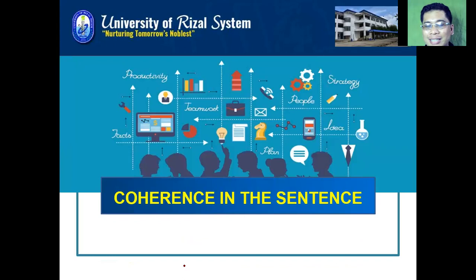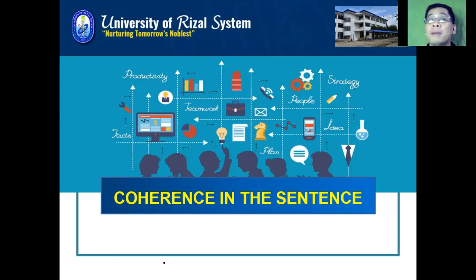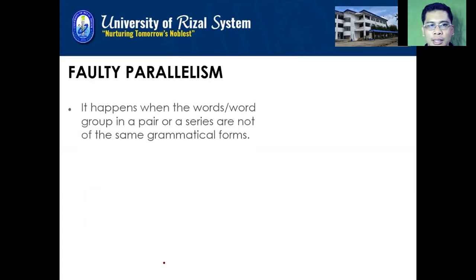Our next discussion is coherence. If unity is the unity of grammar and ideas, coherence is how we weave together all the ideas in a sentence. The first fault under coherence is faulty parallelism. It happens when the words or word groups in a pair or series are not of similar grammatical forms. They should be similar in terms of their function — if one is an adjective, all should be adjectives; if one is an adverb, all should be adverbs.